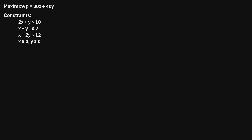In this video, I will explain how to use the simplex method to solve a linear programming problem. So let's check out this problem. It says maximize P equals 30x plus 40y subject to the following constraints. We're trying to figure out what values of x and y would maximize P, assuming that x and y have to meet these constraints.